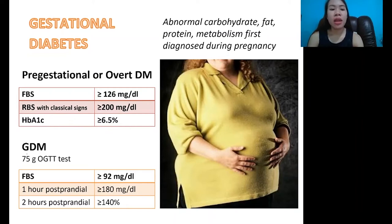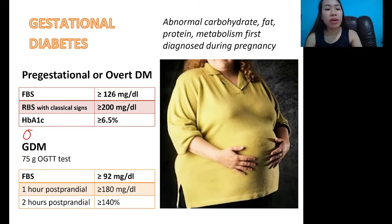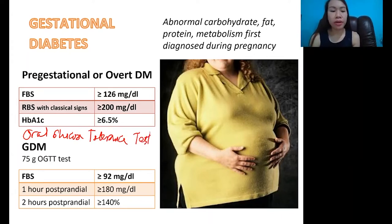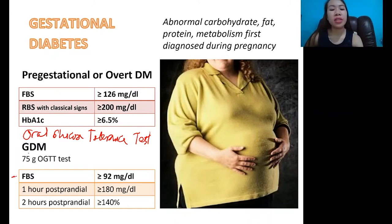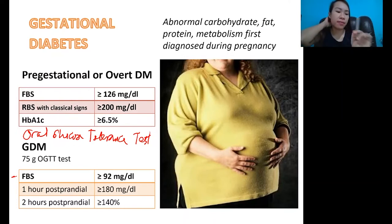For gestational diabetes mellitus, we use the 75-gram OGTT test — Oral Glucose Tolerance Test. We check the mother's tolerance on the glucose test. First, the mother is fasted for 8 hours. Then we check the fasting blood sugar. If it is greater than or equal to 92 mg per deciliter, that counts as one point toward diagnosing her with GDM.